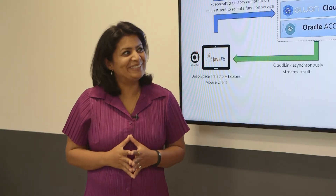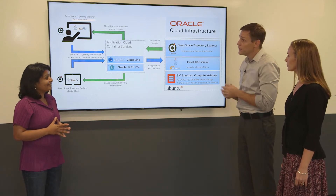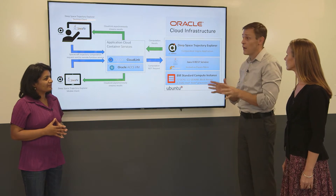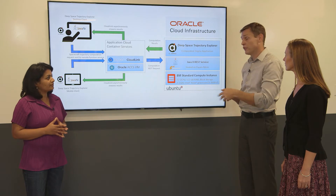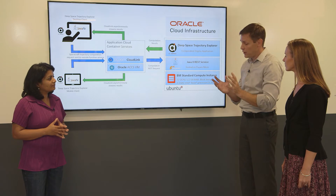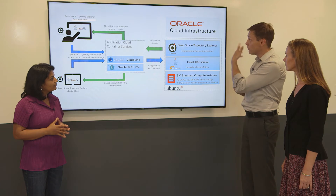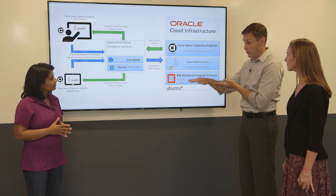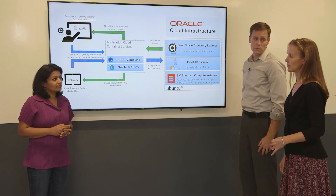So let's talk about what you built in the cloud. It starts with one of our more recent commercial products called the Deep Space Trajectory Explorer. The Deep Space Trajectory Explorer is a JavaFX application which visually allows the user to design spacecraft trajectories to distant targets such as Saturn and Jupiter. It sends parameters up to services running in the Oracle Cloud Infrastructure which then computes and returns the results back. I use this tool at Johnson Space Center where we're designing the next generation of manned missions to the moon and beyond.